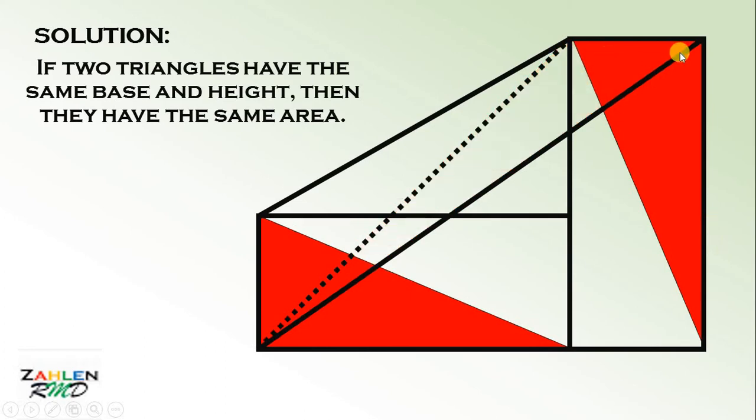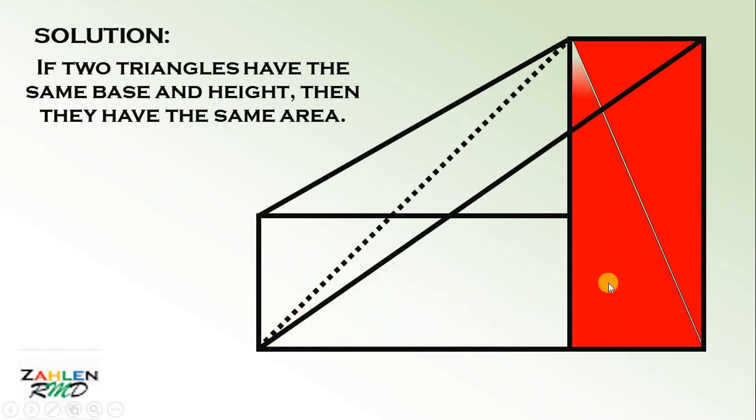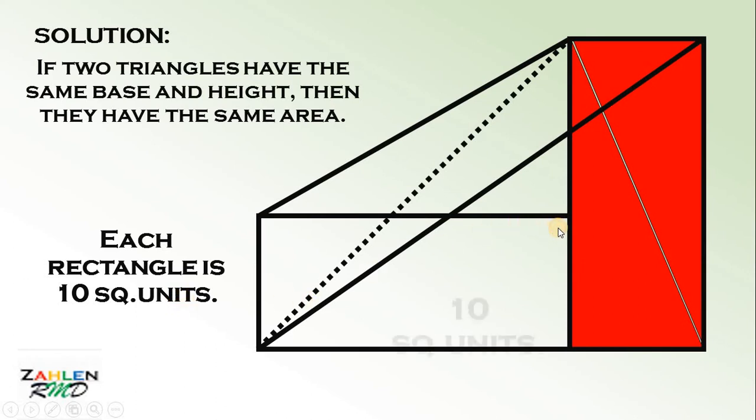Notice that the red part is exactly half of the area of this rectangle. Therefore, we can put this part into the other half of the rectangle. Therefore, the shaded area is exactly one rectangle. And on the given, it says that each rectangle is 10 square units. Therefore, the area of the red region is simply 10 square units.